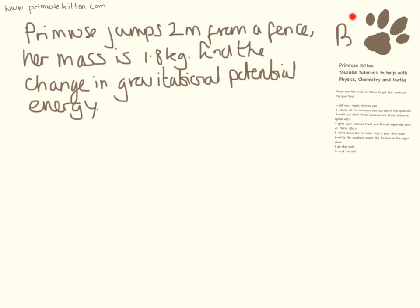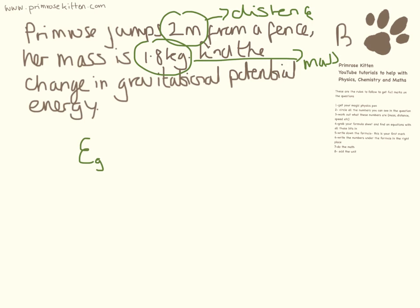Moving on to some slightly trickier questions now. Primrose jumps 2 metres from a fence. Her mass is 1.8 kilograms. Find the change in gravitational potential energy. So here we have a distance and here we have a mass. So three things involved here. Gravitational potential energy is mass times gravity times height. So her mass is 1.8, gravity you need to remember is 10, and height is 2 metres. So if we just pop all of those into the calculator, we'll get 36, and again that's measured in joules.